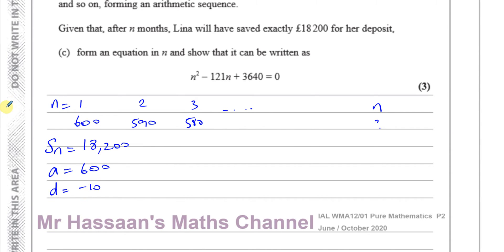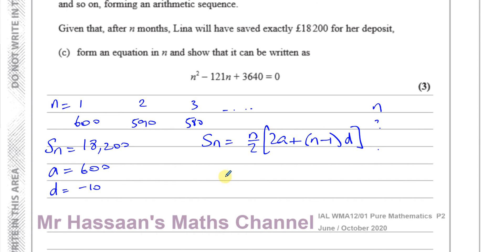We use the sum formula S_N equals N over 2 times 2A plus N minus 1 times D. Here A is 600, D is negative 10, and S_N is 18,200. Substituting all of this into the formula, we should end up with something that simplifies to the required equation.